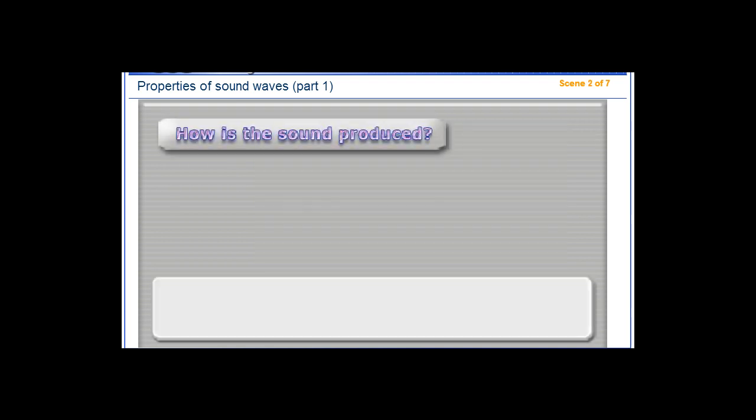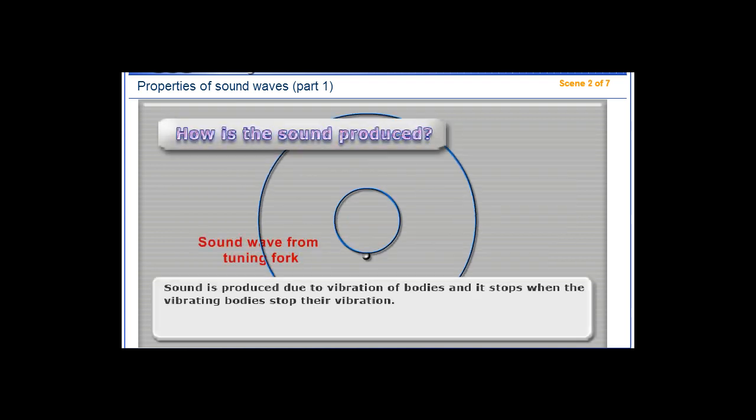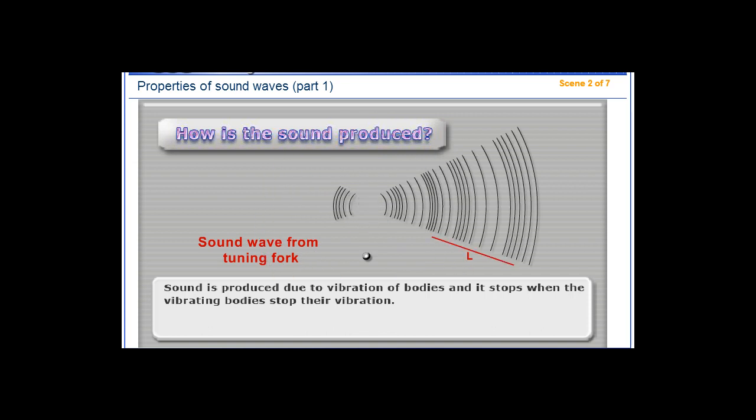How is sound produced? Sound is produced due to vibration of bodies, and it stops when the vibrating bodies stop their vibration.